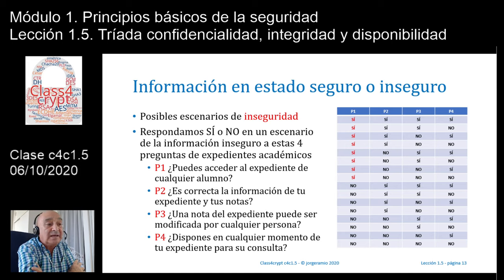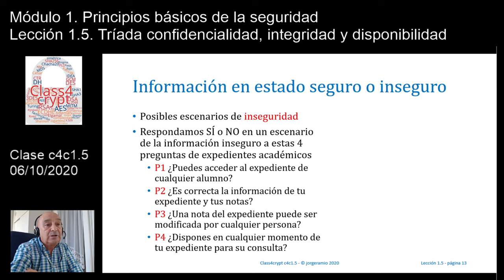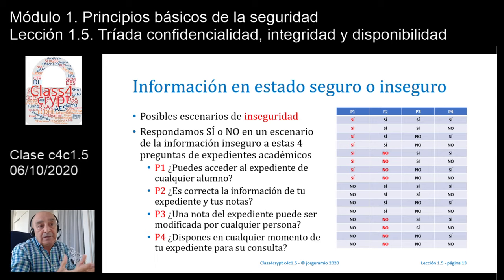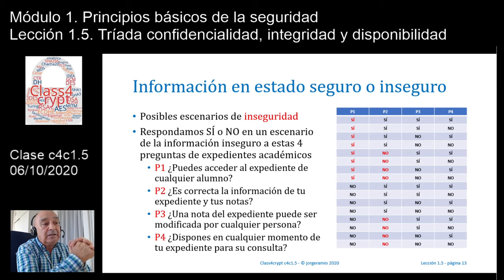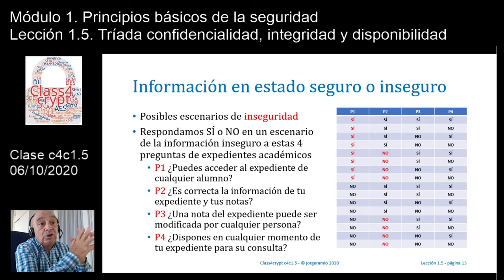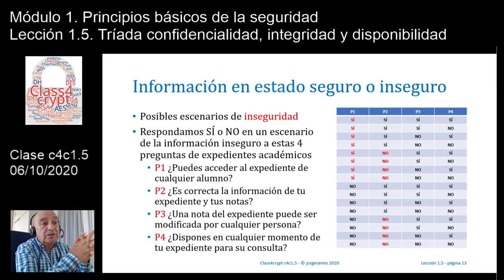En un escenario de inseguridad, la pregunta P2 dice: ¿es correcta la información de tu expediente de notas? Respondería que no. No es correcta la información, porque hoy día he entrado y tenía un 5,8, y mañana me encuentro con un 4,6. Alguien ha modificado la información y va cambiando. Una asignatura que cursé y aprobé hace dos años no tiene sentido que antes tuviese un 5,6 y ahora aparezca un 4,8. En un escenario de inseguridad, lo que marcaría en la respuesta P2 sería un no: la información no es correcta.